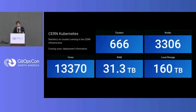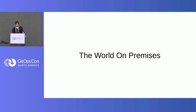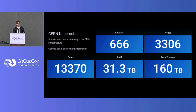CERN has a quite large private cloud. The Kubernetes deployments are also quite significant — we have more than 600 clusters, thousands of nodes, more than 10,000 cores today running on Kubernetes. This is our world on-premises, and this is where I will start today: describing what are the needs we have to support this kind of infrastructure, what we try to do to ensure high availability, proper upgrades, and how we use GitOps to help with this.